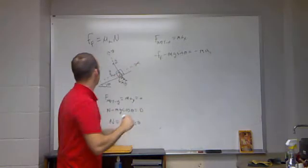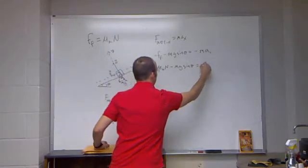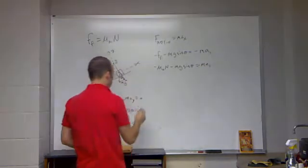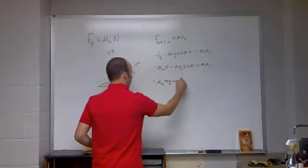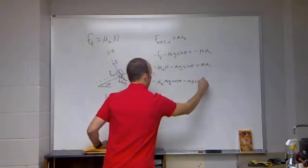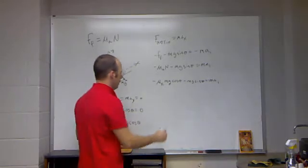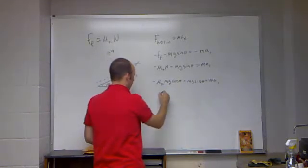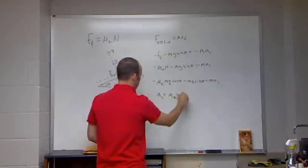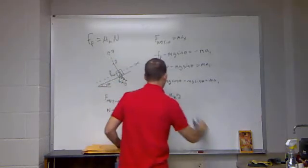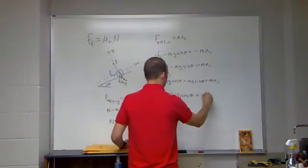So I can substitute for the frictional force, negative mu k n minus mg sine theta equals negative m a1. And then n, I can put in this. So I get negative mu k mg cosine theta minus mg sine theta equals negative m a1. The mass is all canceled. And I get, and I can work it out, which I'll let you do. But I get a1 equals, let me write this out, yeah that's fine.